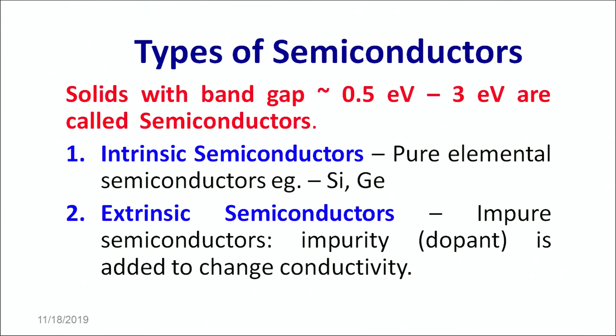Intrinsic semiconductors are pure elemental semiconductors such as silicon, germanium, etc. Extrinsic semiconductors are impure semiconductors. By the word impure, we mean that an atom of something else is added inside the material. So an impurity or a dopant is added to change the conductivity. Such semiconductors are known as extrinsic semiconductors.